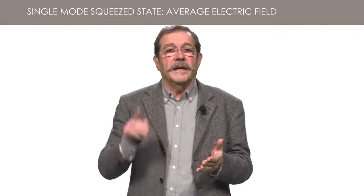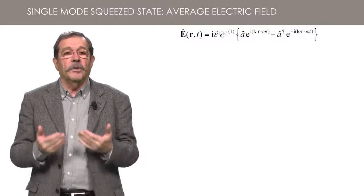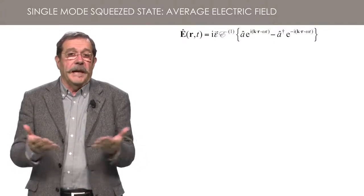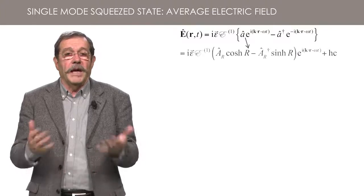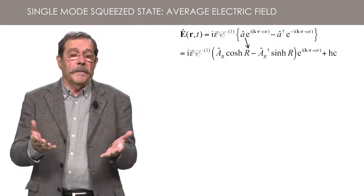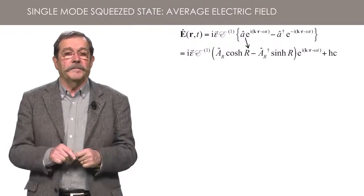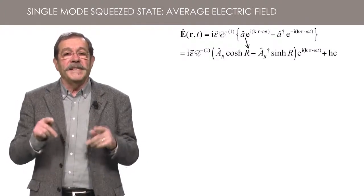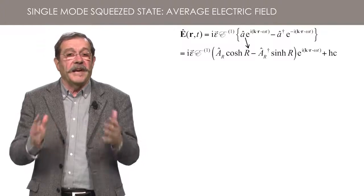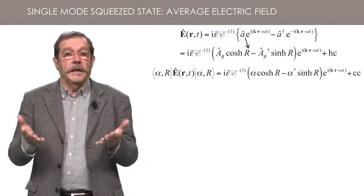Let us first calculate the average electric field in a squeezed state alpha R. For that, we start from the Heisenberg form of the single mode electric field. We can express the electric field as a function of AR and its conjugate using the transformation formulae just seen. Remember that HC means Hermitian conjugate. Since the squeezed state alpha R is an eigenstate of AR, you can easily find the value of the average of the electric field.